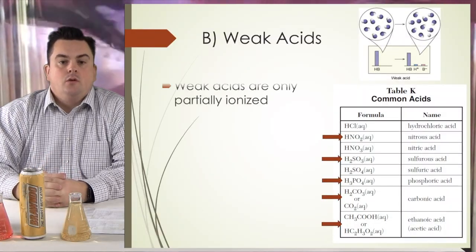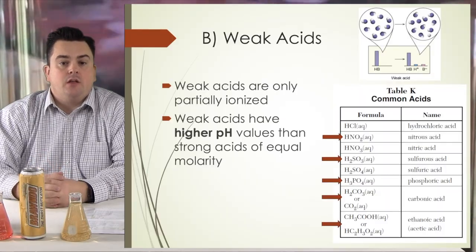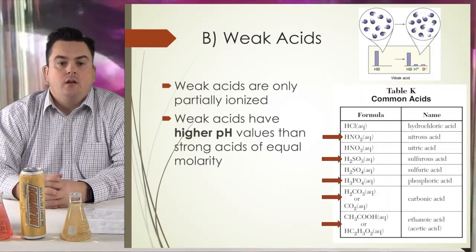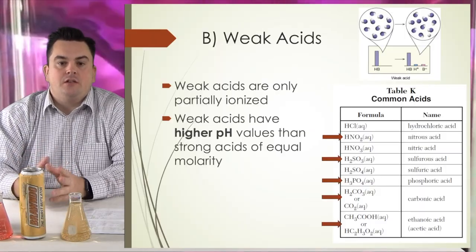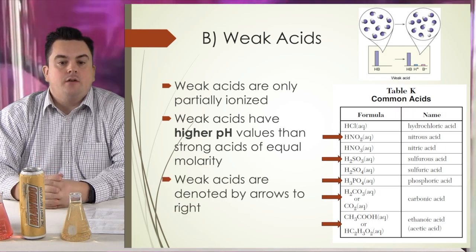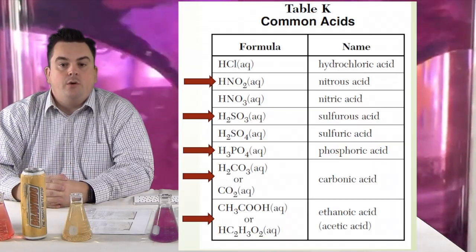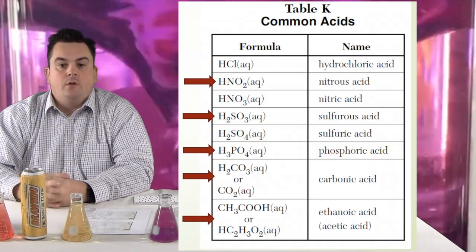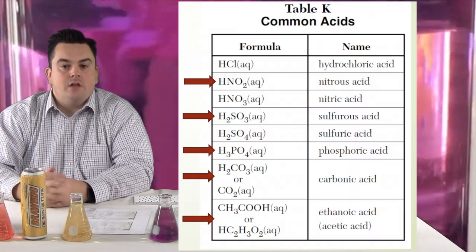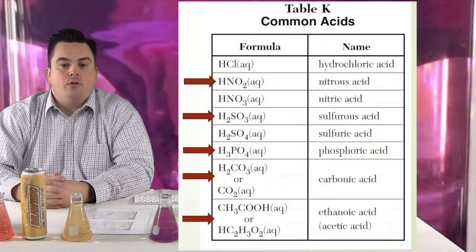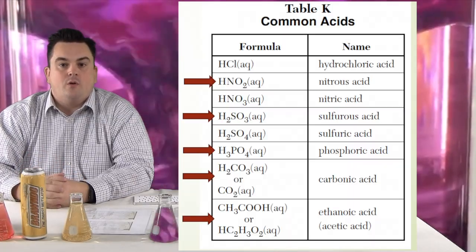Weak acids are only partially ionized and have higher pH values than strong acids of equal molarity. They're still acidic, so pH is still less than 7 — just a little higher than strong acids. Looking at Table K, weak acids include HNO2 aqueous (nitrous acid), H2SO3 (sulfurous acid), H3PO4 aqueous (phosphoric acid), H2CO3 (carbonic acid), and HC2H3O2 (ethanoic or acetic acid).